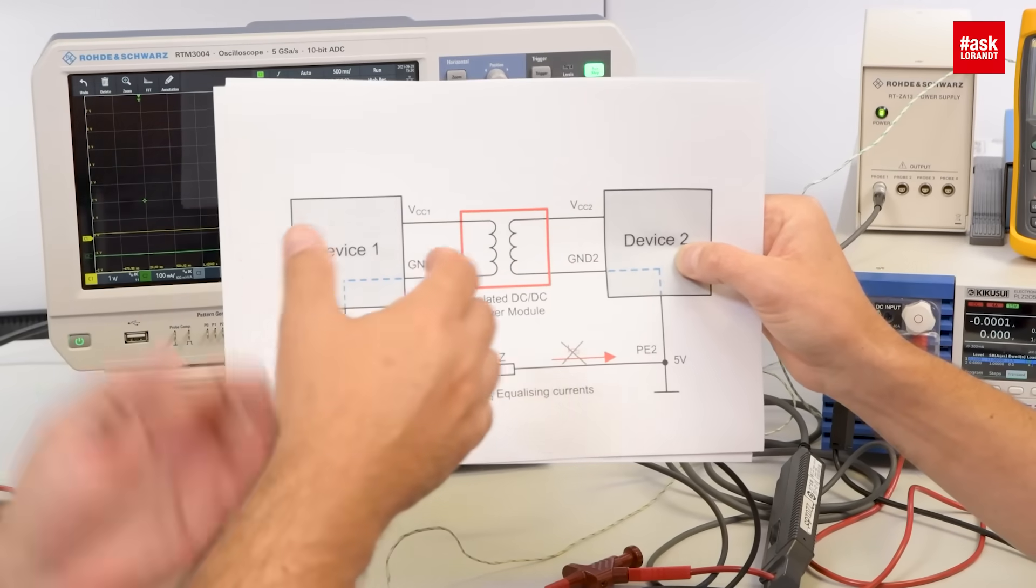This is only a functional isolated power module, that means no hazardous voltage should be present at the input. So it means my device number one must be already operating with the AC DC converter which have the safety isolation. Yes.